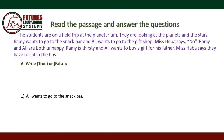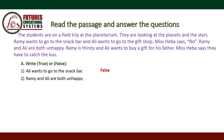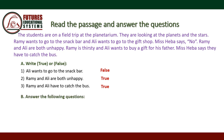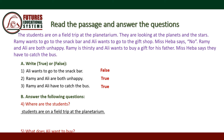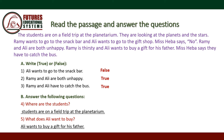True or false. Number 1: 'Ali wants to go to the snack bar' — False. Number 2: 'Rami and Ali are both unhappy' — True. Number 3: 'Rami and Ali have to catch the bus' — True. Answer the questions. Number 4: Where are the students? They are on a field trip at the planetarium. Number 5: What does Ali want to buy? Ali wants to buy a gift for his father.